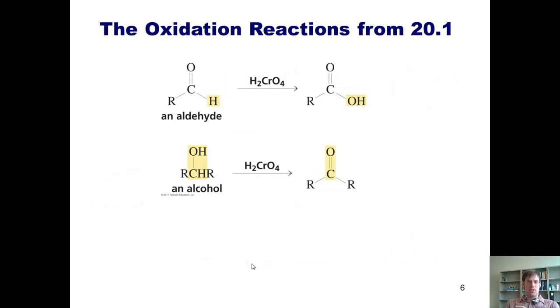Now we'll address the oxidation reactions covered in Section 20.1. These first two should look familiar to you. We originally learned them back in Chapter 10. If I take an aldehyde and treat it with dihydrogen chromate, chromic acid, I can oxidize it all the way up to a carboxylic acid. Now, you heard me say the word oxidize. Is this really an oxidation?